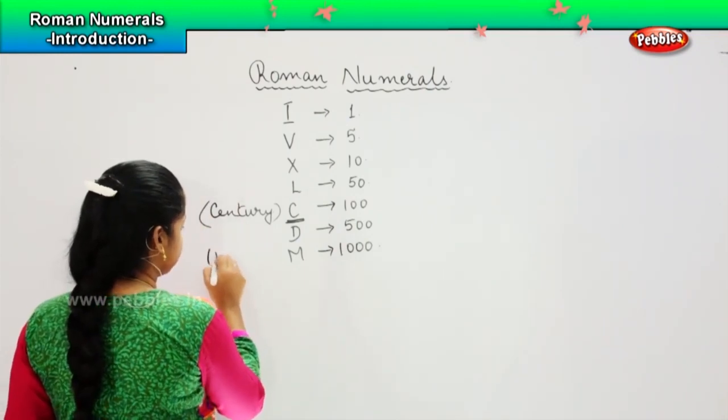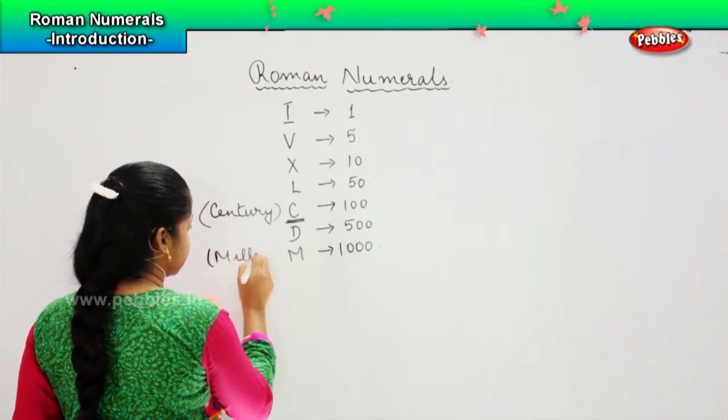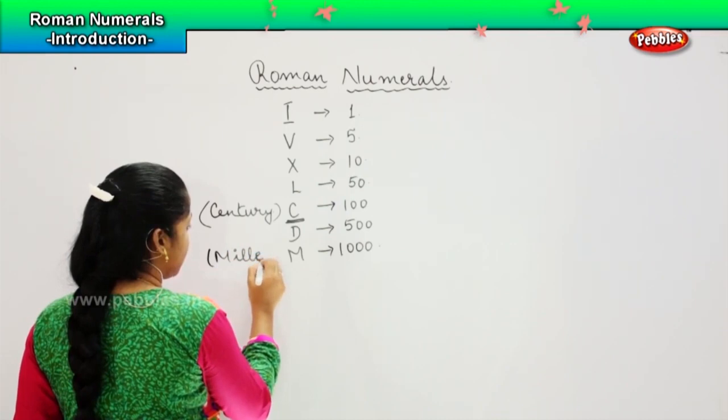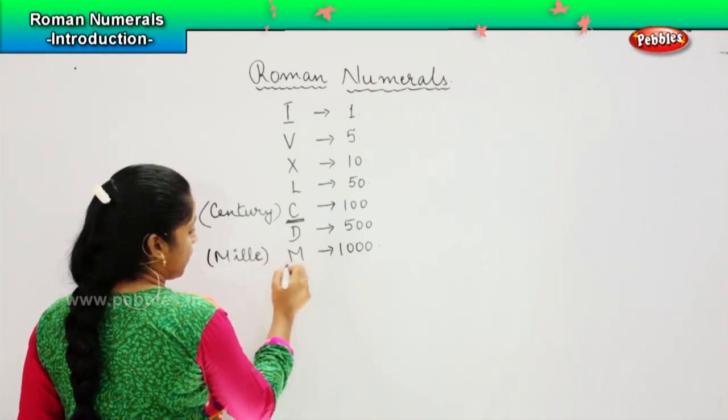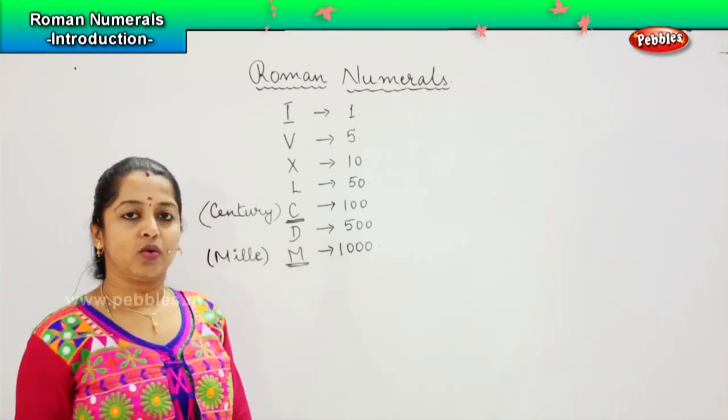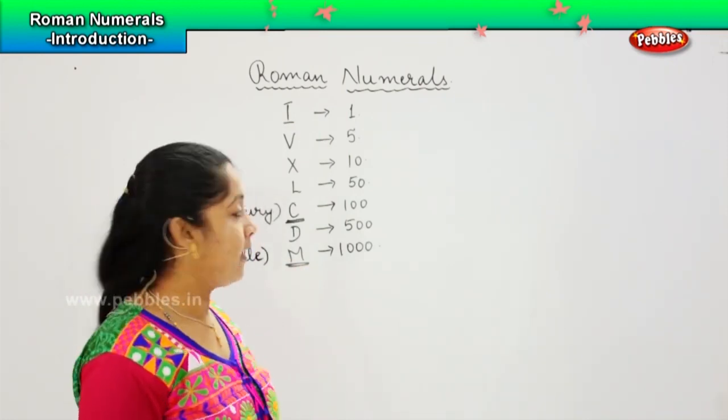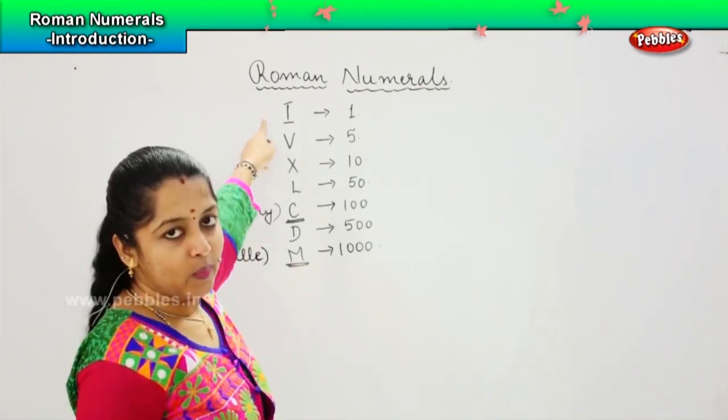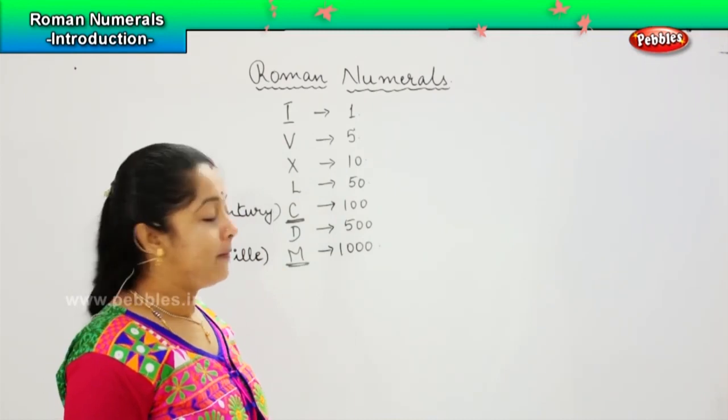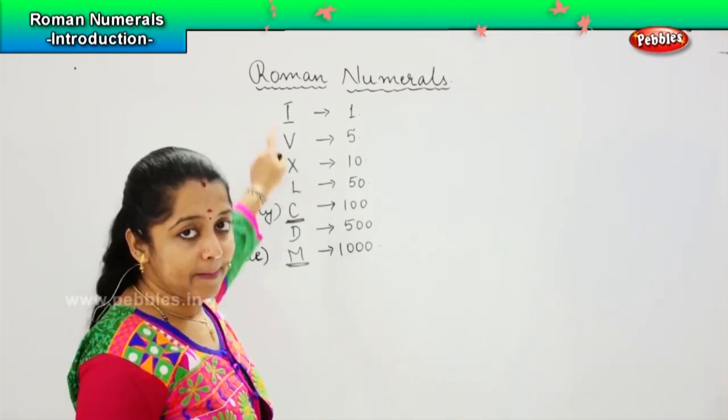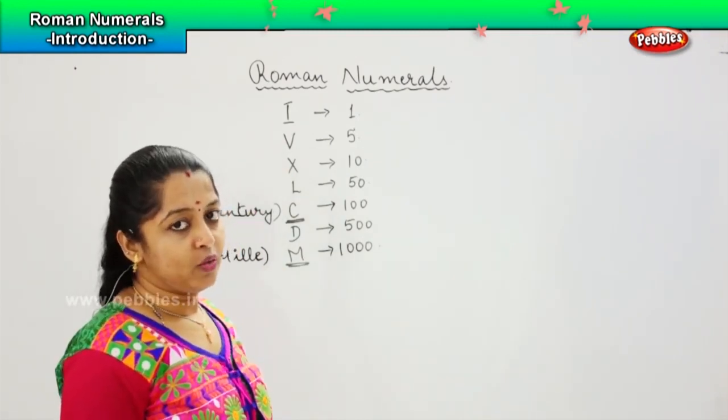Next comes 1000. So if you remember the word milli, you will remember that M denotes 1000. And I, you know very well, it is the very first number in the Roman numerals.